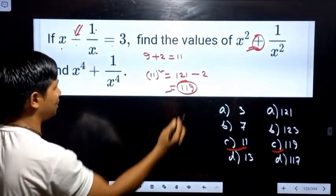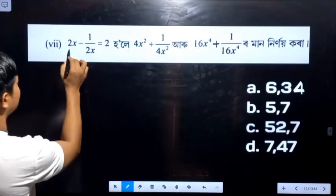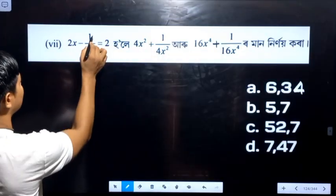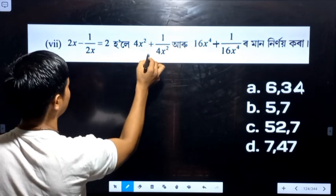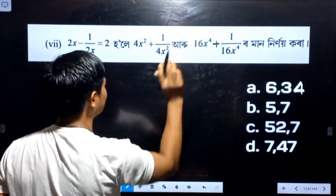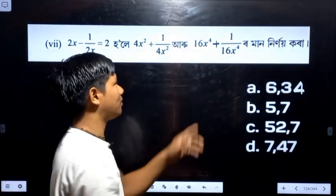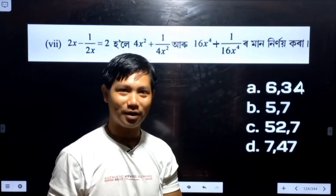So in that, first we would take question 2 to maximum: 2x minus 1 by 2x equals 4x squared plus 4, one by four x squared. Then look at sixteen and four plus one by sixteen.